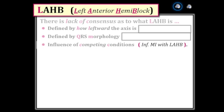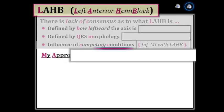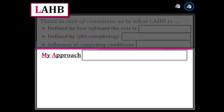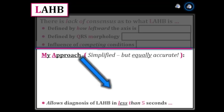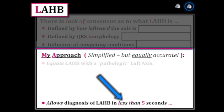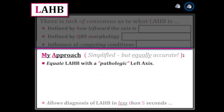Formation of inferior Q waves — the marker of inferior infarction — may obliterate the small R, deep S wave pattern expected with left anterior hemiblock. By the same token, left anterior hemiblock may hide inferior Q waves of a prior infarction. I'd like to present my approach to the ECG diagnosis of left anterior hemiblock, which simplifies assessment yet remains as accurate as any other approach, with the distinct advantage of allowing the diagnosis in less than five seconds. With this approach, we equate left anterior hemiblock with a pathologic left axis.